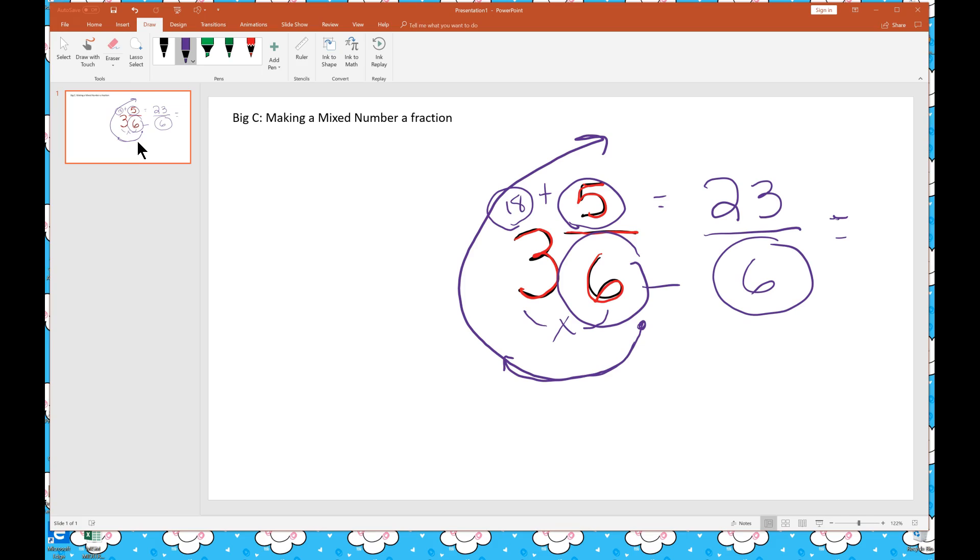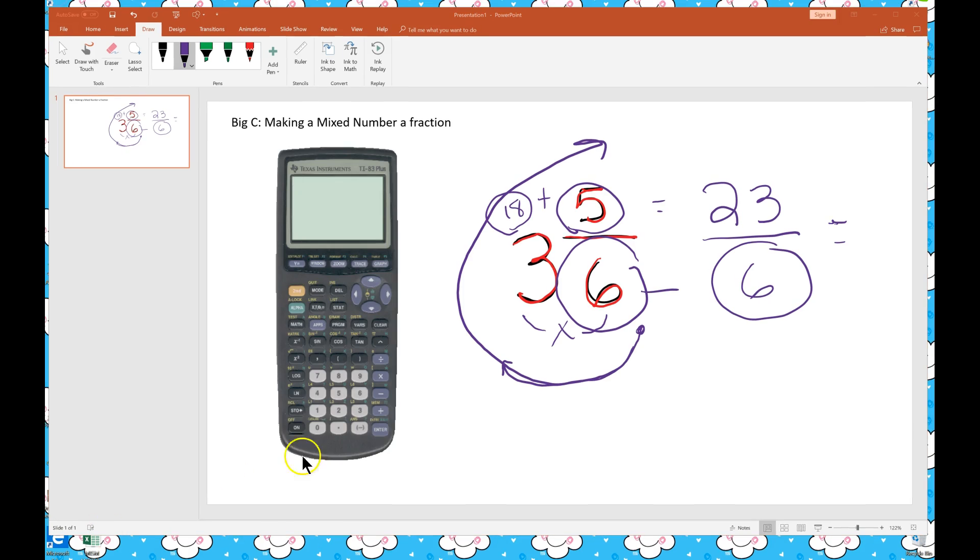That is using the big C to make our fraction out of a mixed number. I also want to show you really quick how to do it on a calculator. When we have a whole number attached to a fraction, we're actually adding.